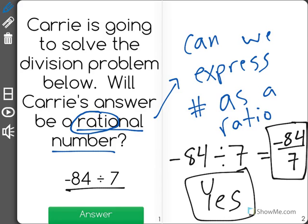Any division problem you could think of will end up with a rational number because division is the same as a fraction. Fractions are the same as ratios, and ratios lead us to rational numbers.